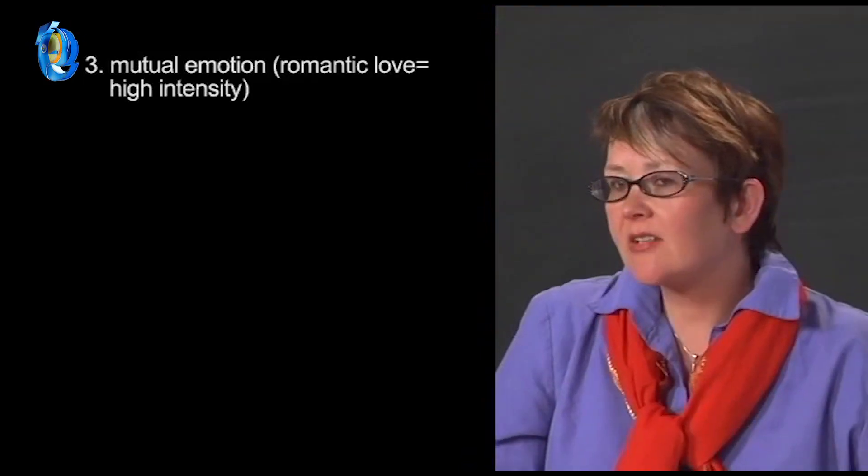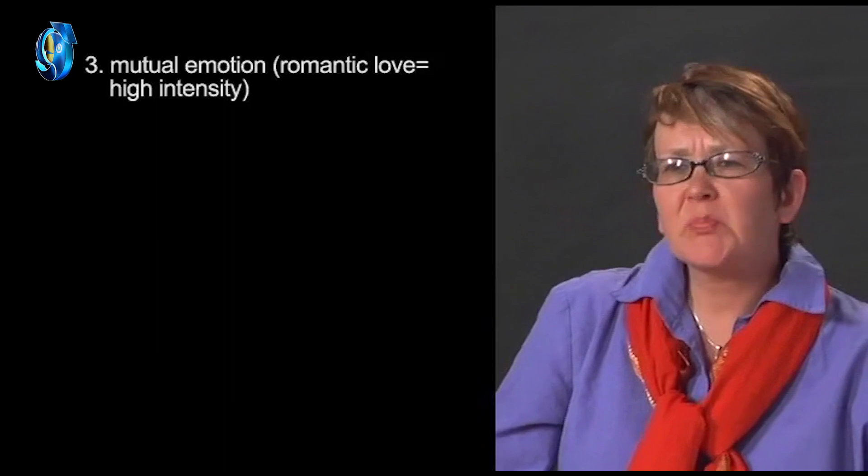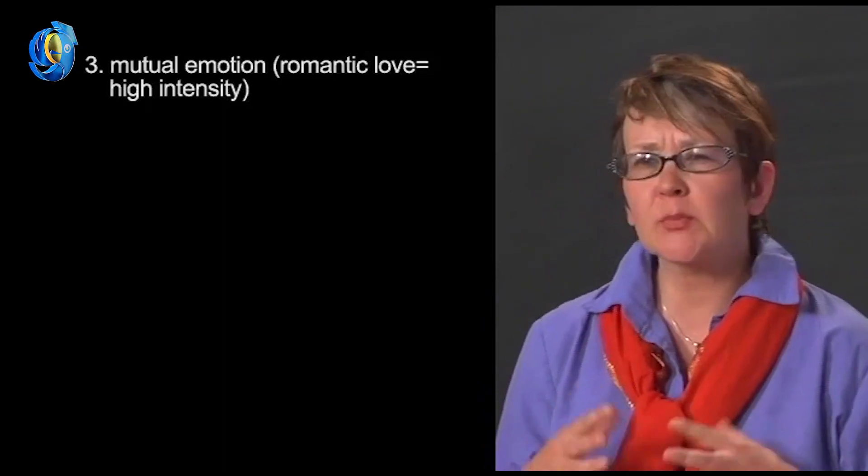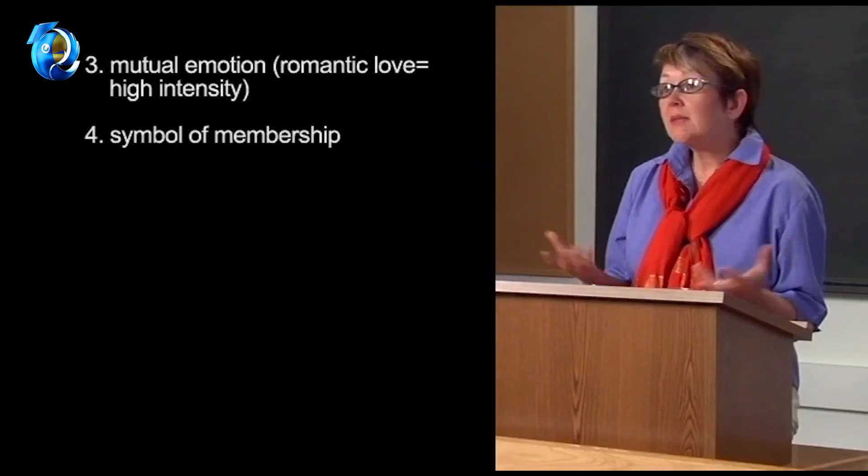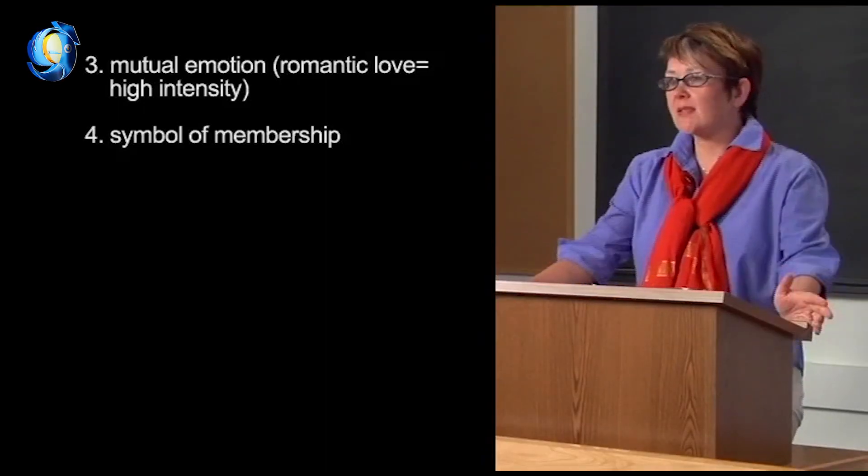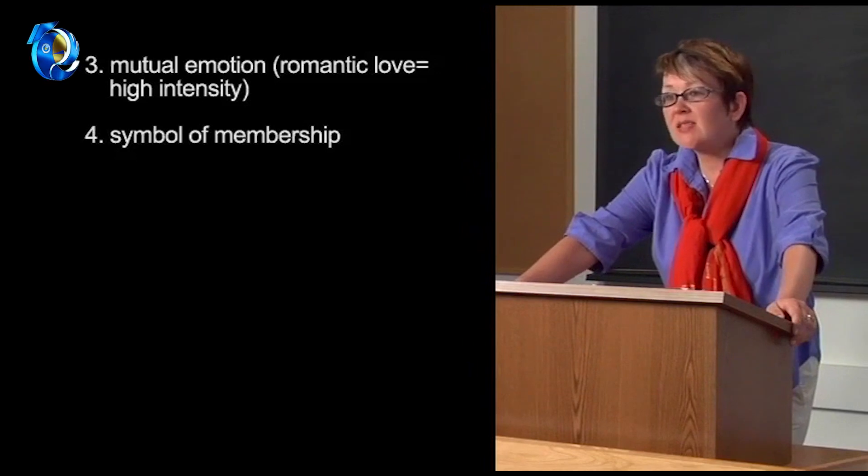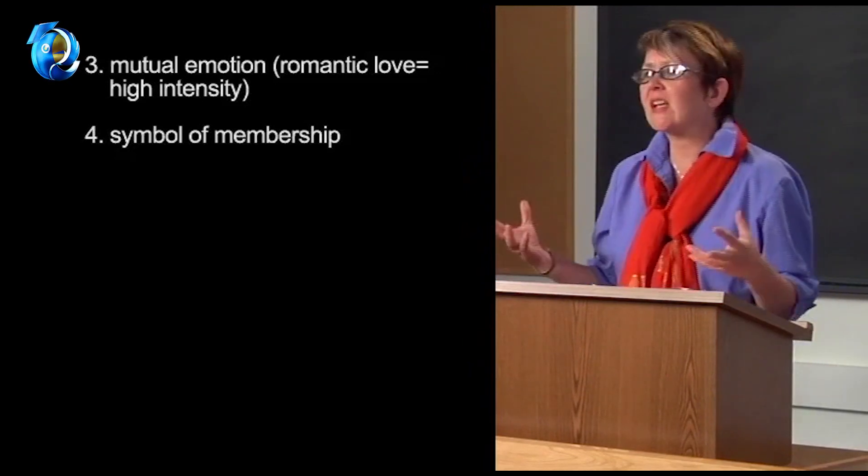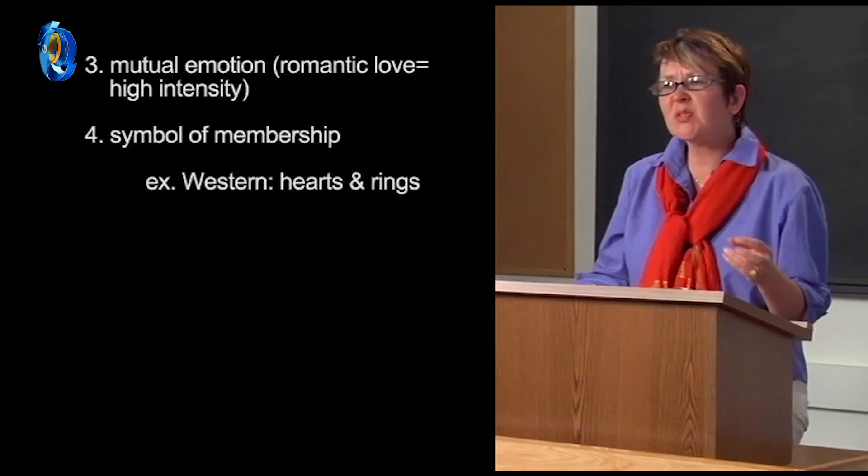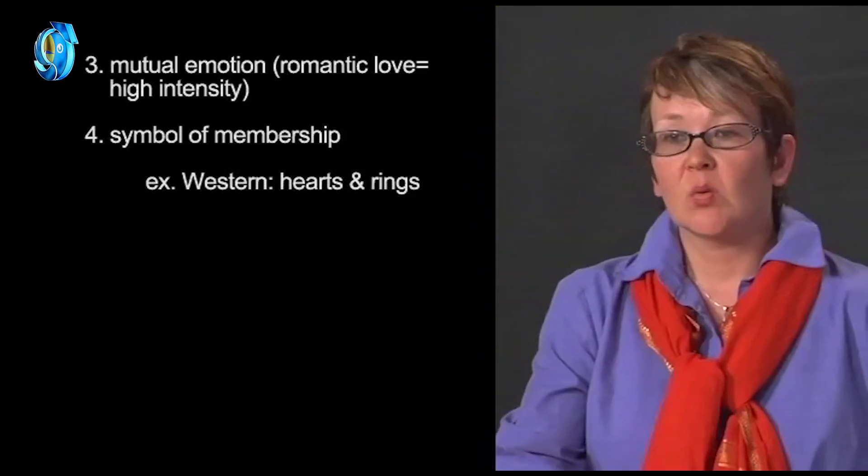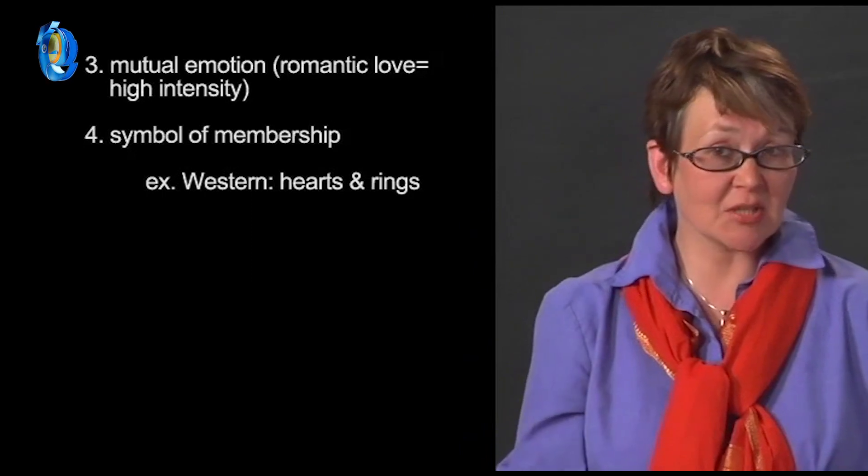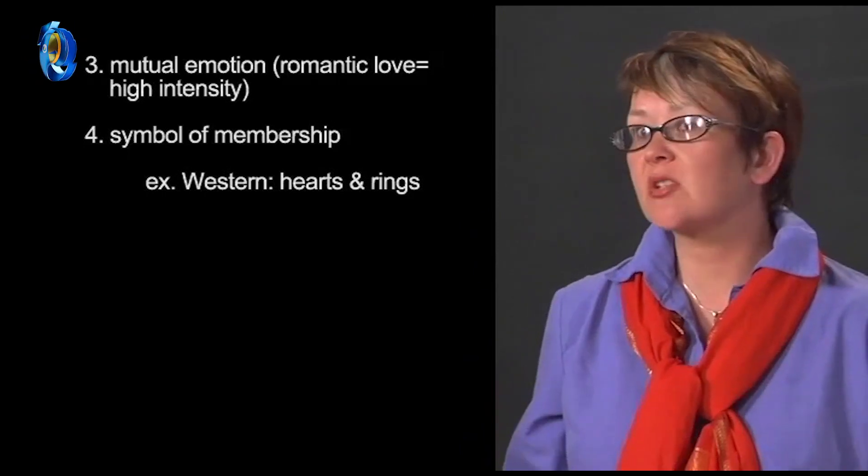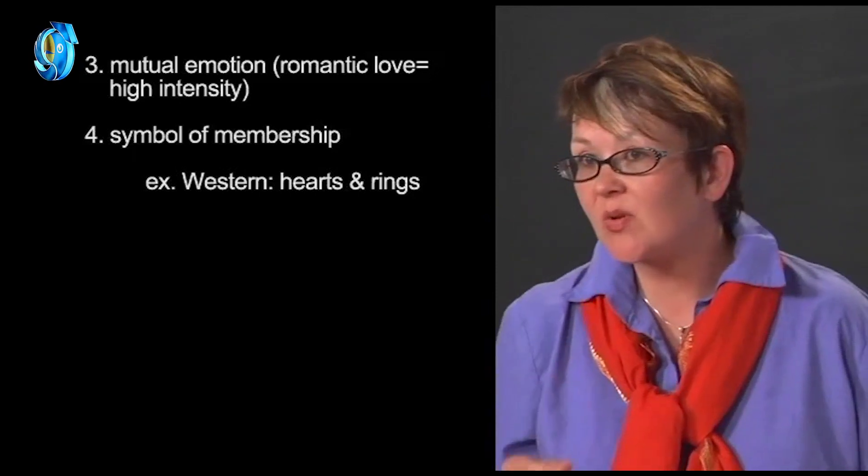The final characteristic of a ritual is that it produces an emotionally charged symbol that represents membership in some group. Well, what are some of the symbols in romantic love? In Western cultures, love is associated with heart-shaped objects and rings. For instance, a wedding ring symbolizes the couple's love and commitment. We all know how important these symbols can be. For instance, losing a ring can cause a lot of anxiety. So be careful with those symbols.